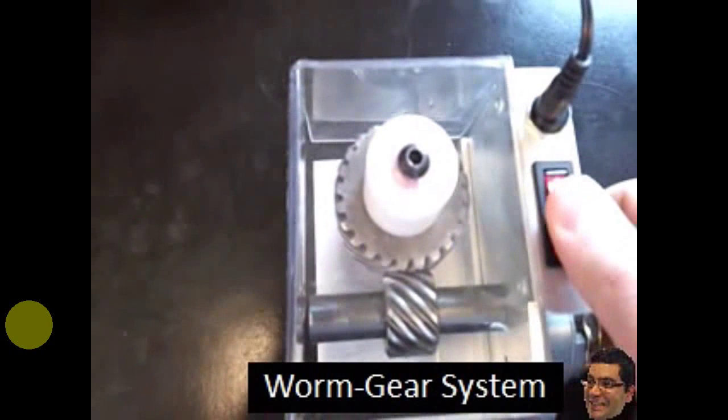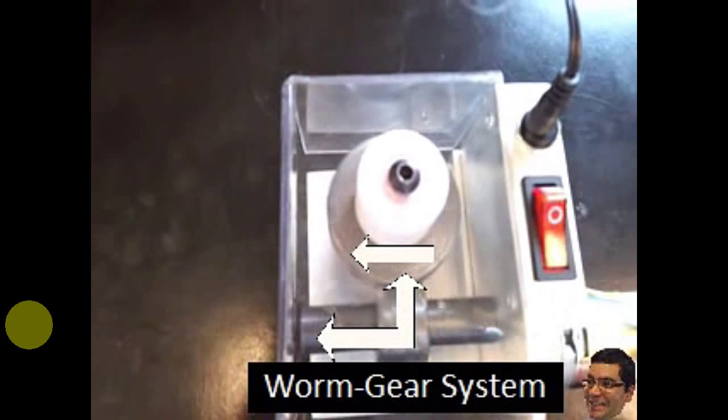Now, bevel gear, cool thing about it is that it transfers motion from horizontal to vertical. This is just a regular chain and sprocket. And finally, worm gear system.